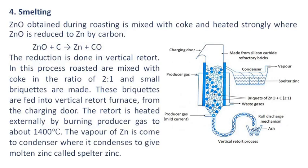Smelting. Zinc oxide obtained during roasting is mixed with coke and heated strongly, where zinc oxide is reduced to zinc. The reduction is done in a vertical retort. The roasted ore is mixed with coke in the ratio of 2:1 and small briquettes are made. These briquettes are fed into a vertical retort furnace from the charging door. The retort is heated externally by burning producer gas to about 1400 degrees Celsius. The zinc vapors pass to a condenser where they condense to give molten zinc called spelter zinc.